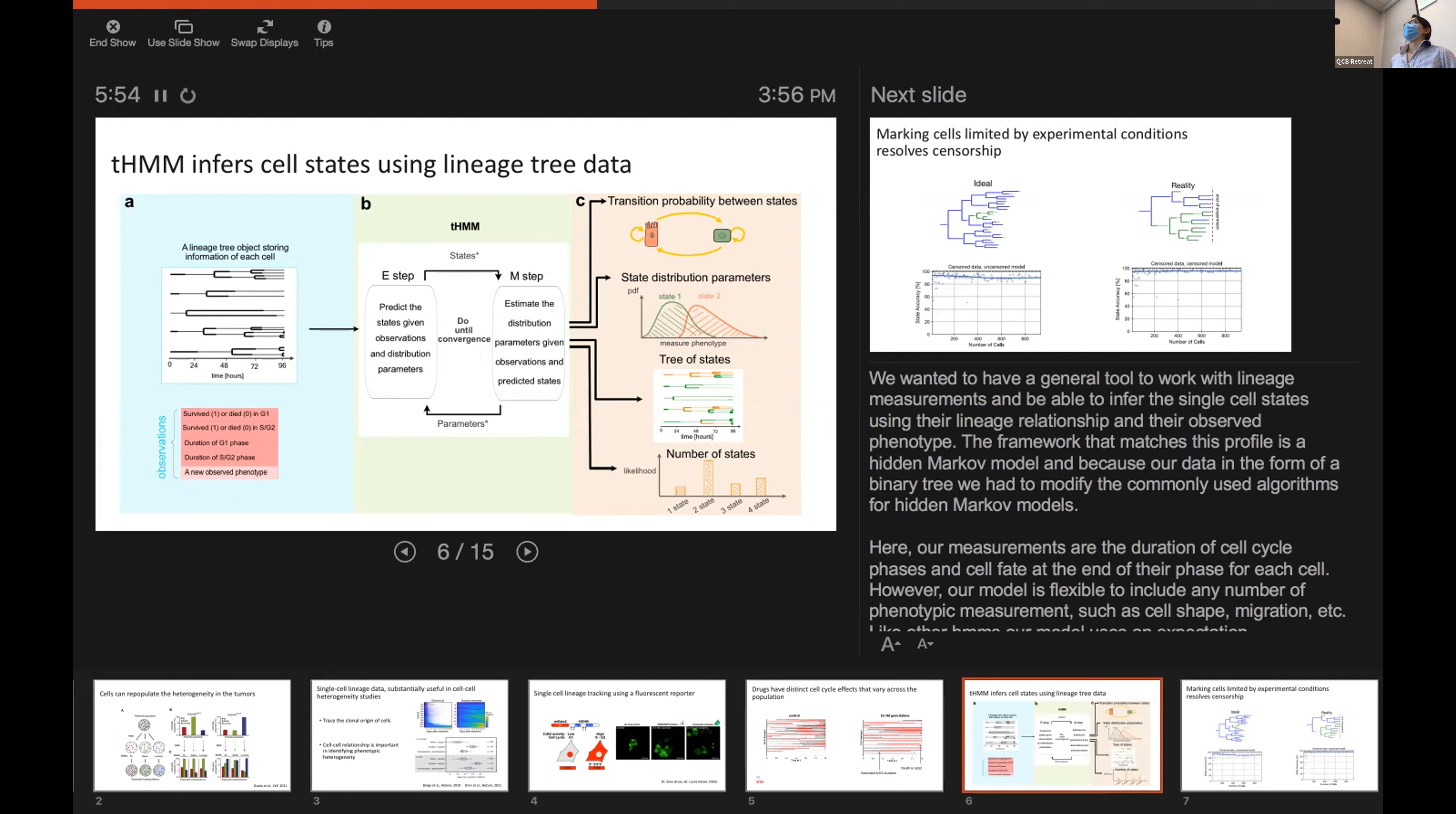So, the outputs of our model would be the transition probabilities between different states. Or it could be the state distribution parameters. For example, we could infer the distribution of G1 phase duration for cells that are in state one.